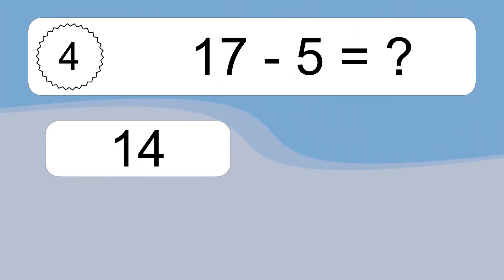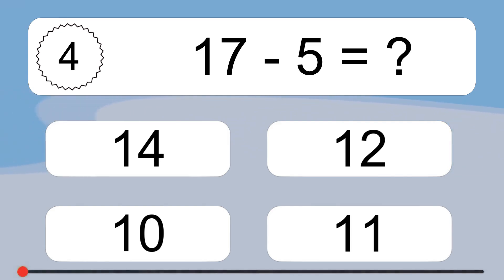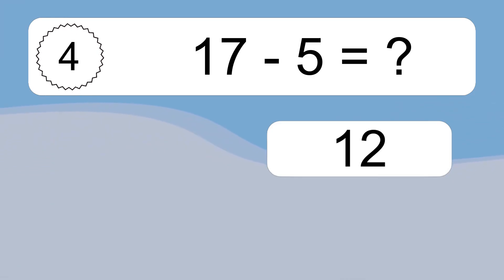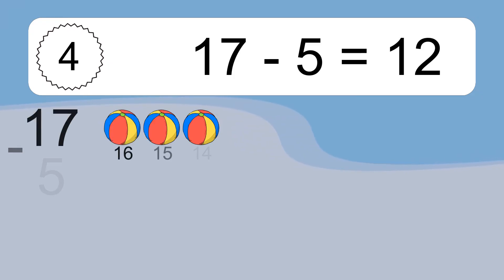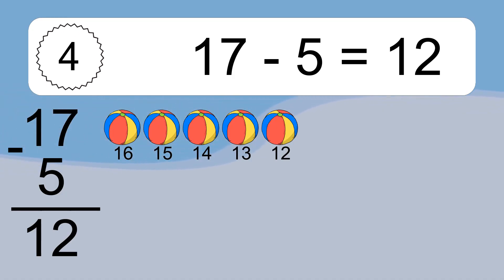17 minus 5 equals what? 17 minus 5 equals 12. Let's count it: 16, 15, 14, 13, 12.